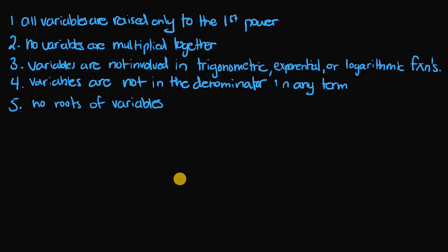The first rule is that all variables are raised only to the first power — so not x to the negative one or x to the zero or any other power except one. Secondly, no variables are multiplied together, so you don't have something like x times y. Variables are not involved in any trigonometric, exponential, or logarithmic functions, so you don't have something like sine of x or ln of x.